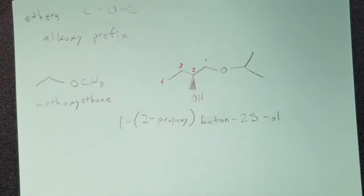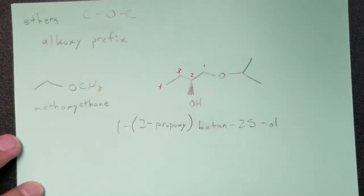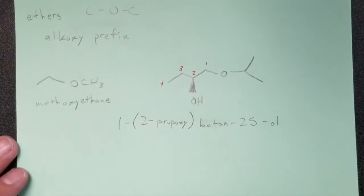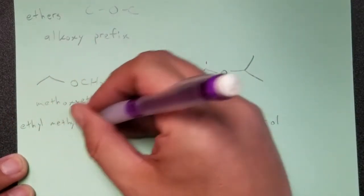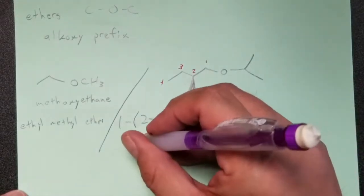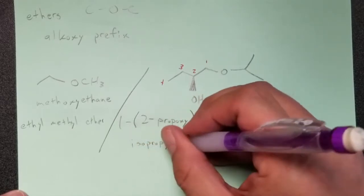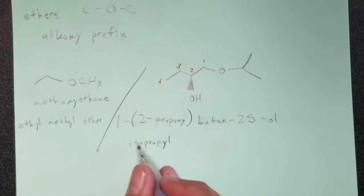For common names of ethers, you name the two alkyl halves in alphabetical order and add the word 'ether.' So the simple example is ethyl methyl ether. The complex branched example doesn't lend itself well to a common name — you typically only use common names with simple ethers.